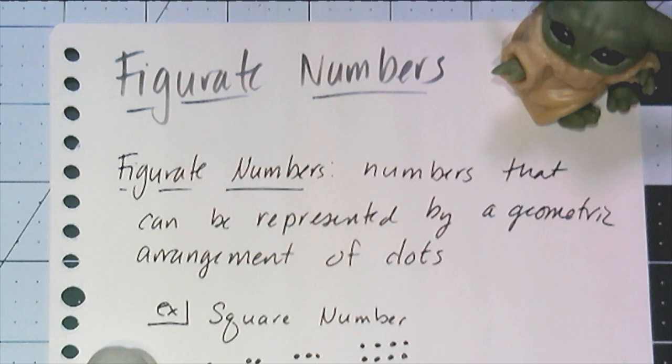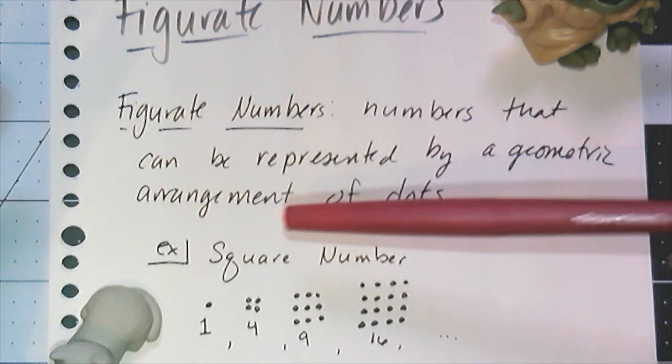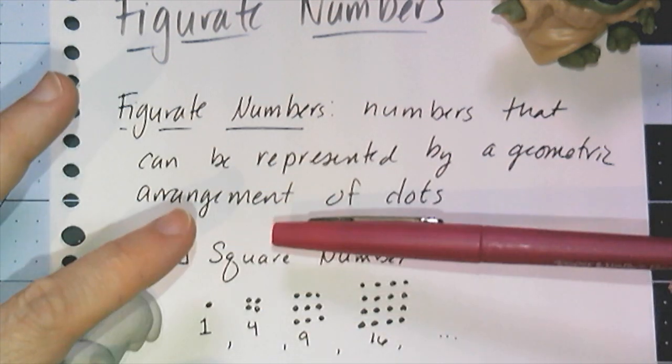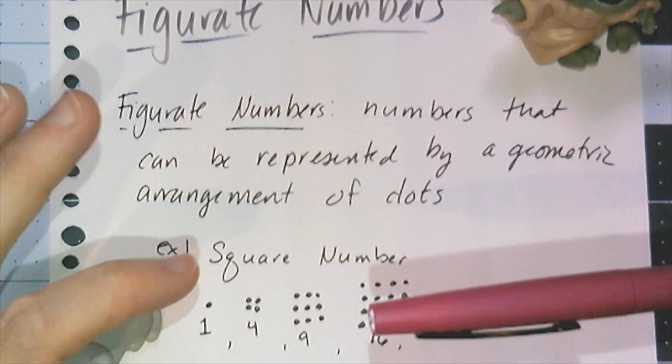Hey y'all. In this video we're going to talk about something called a figurate number. A figurate number is just a number, usually a sequence of numbers, that can be represented by a geometric arrangement of dots.